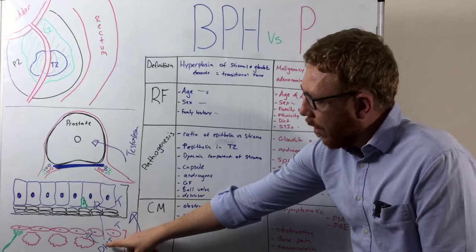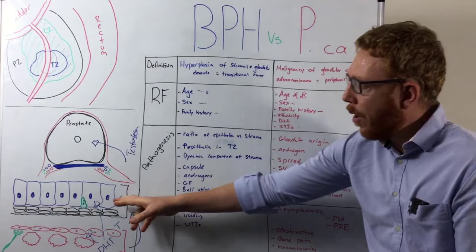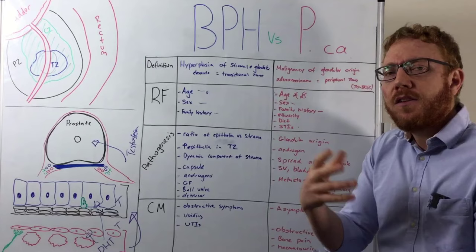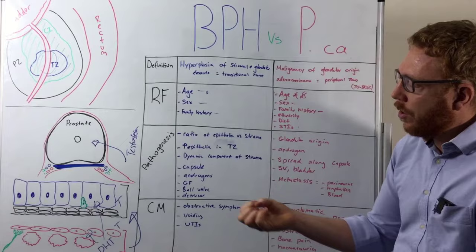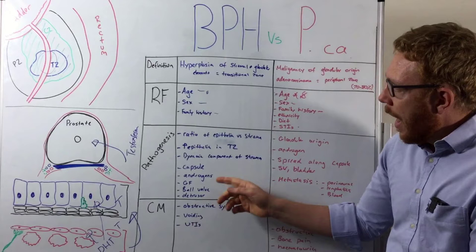Beyond DHT and testosterone, because these are lipid-soluble hormones that enter the nucleus, both epithelial and stromal cells start producing more growth factors — such as insulin-like growth factor and fibroblast growth factor — which further cause these cells to increase their growth. So growth factors also play a role, though they are likely linked to the testosterone and DHT pathway.